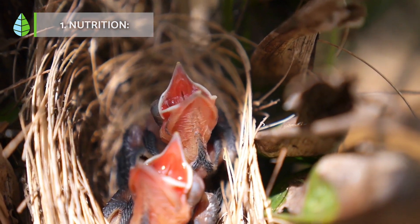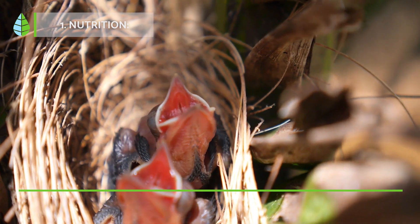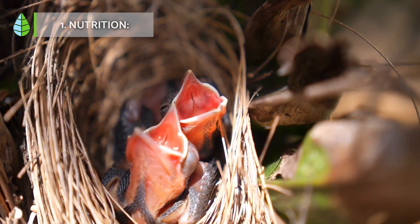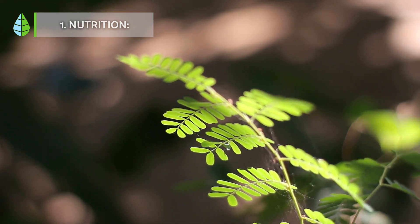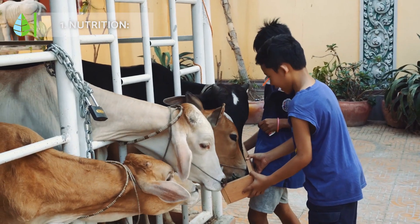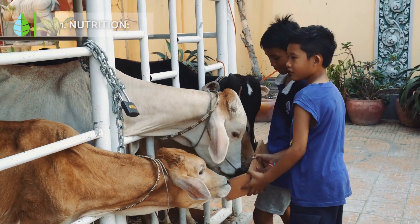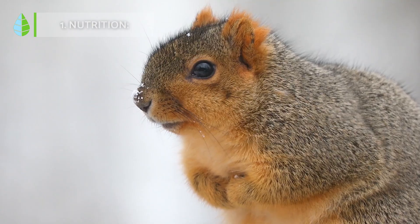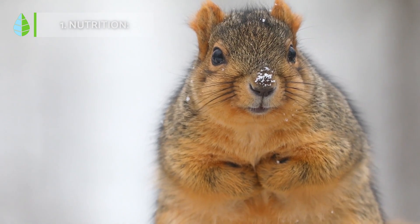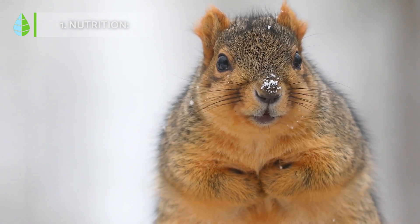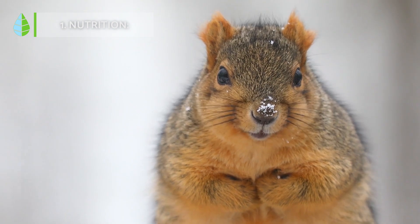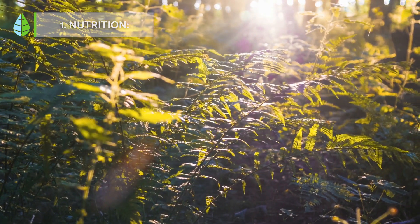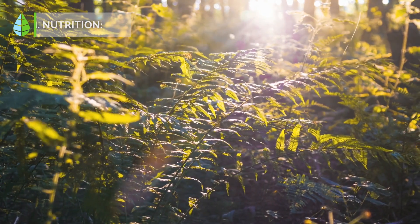Nutrition is the vital function that enables living beings to grow and develop by acquiring the necessary nutrients. There are two types of nutrition: autotrophic and heterotrophic. Through these nutrition processes, complex food chains or networks are established in ecosystems. Respiration is also part of this function, as it allows living beings to acquire the energy needed to sustain enzymatic processes within their cells. For example, plants convert inorganic nutrients such as water and light into organic components through photosynthesis and respiration, supporting their growth.